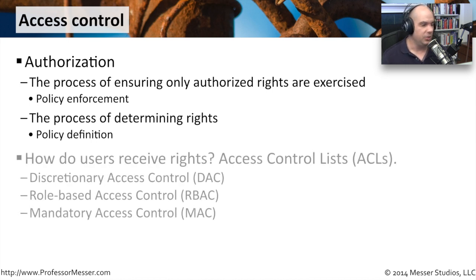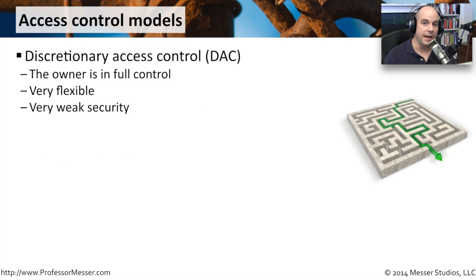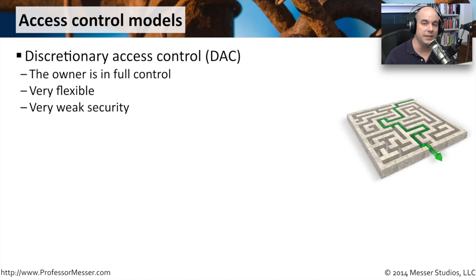There are a lot of different ways to do this. We can have access control lists, and we can configure these to be a discretionary access control, a role-based access control, or a mandatory access control. With discretionary access control, the person who owns the resource is in complete control of who might have access to that resource. It is very flexible, but from a security perspective, it's very weak. You have the person who owns that information making security decisions on who gets to access it, and one small slip from the owner could give full control to everybody without really meaning to do that.